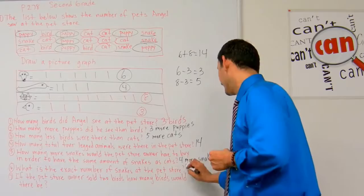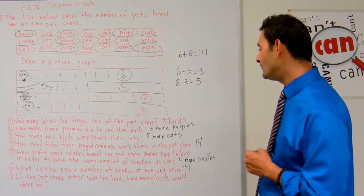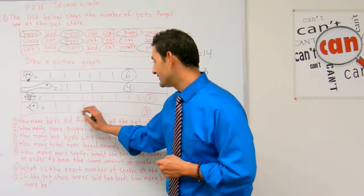And finally, number seven reads: if the pet store owner sold two birds, how many birds would there be? If he sold two birds, there would be one bird left.